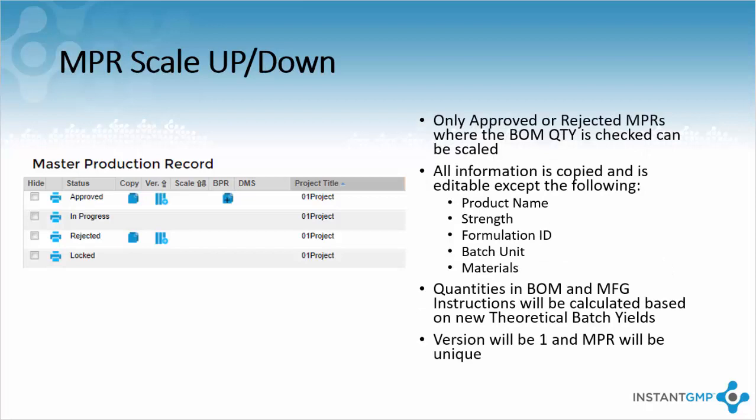Scaling up allows you to change the theoretical yield value of a batch, and based on the new value, all materials in the bill of materials of the NPR will scale accordingly. This will create a new NPR, meaning your original smaller scale method will still be available if you ever need to return to smaller batches. This does not allow you to change the product made or its strength — it is simply to change the amount you will produce.